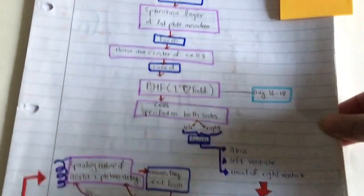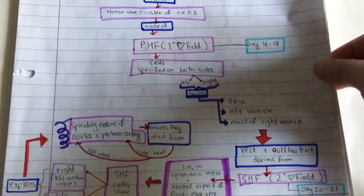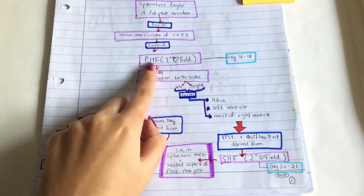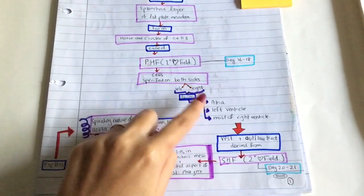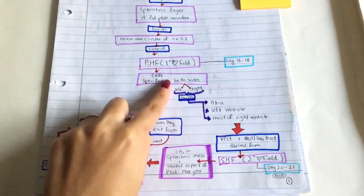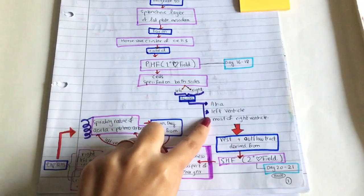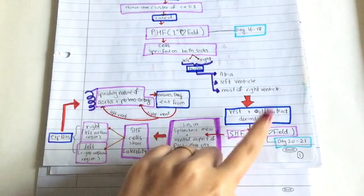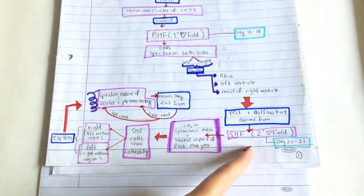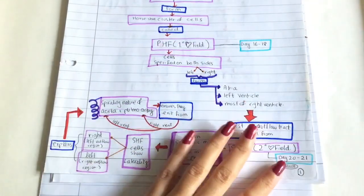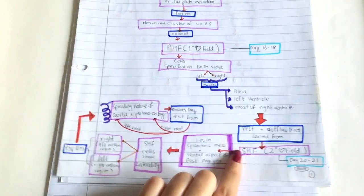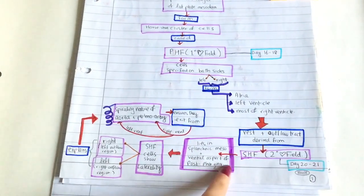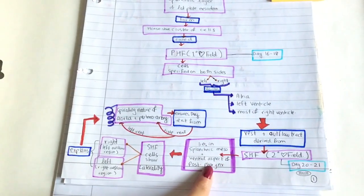Now you have cells specified on both sides. The left and right sides form the atrial left ventricle and most of the right ventricle. The rest of the heart and the outflow tract is derived from the secondary heart field. This happens at about day 20 to 21, and it lies in the splanchnic mesoderm and the ventral aspect of the posterior pharynx.